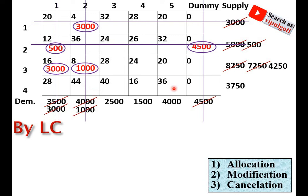Select the minimum cost — this cell is the minimum, so 1,500 is allocated, as that is the minimum value from the corresponding supply and demand. Supply and demand are modified and that column is cancelled.